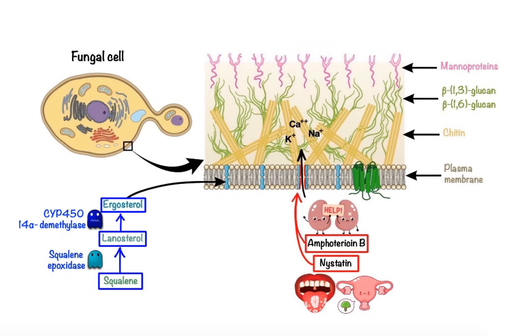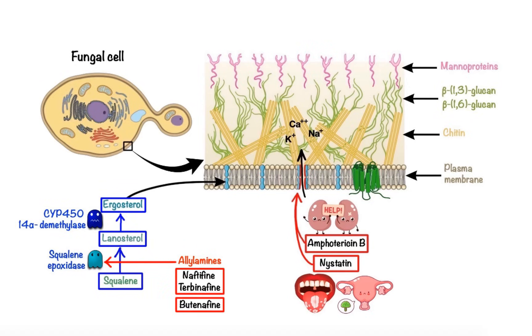Fungal squalene epoxidase is the target of a group of potent antifungals called allylamines, which include drugs such as naftifine and terbinafine, as well as an allylamine derivative drug called butenafine.